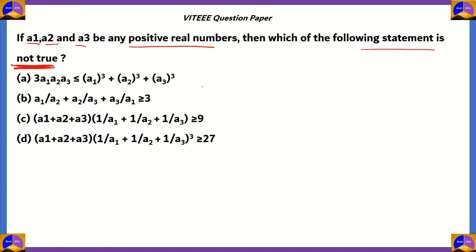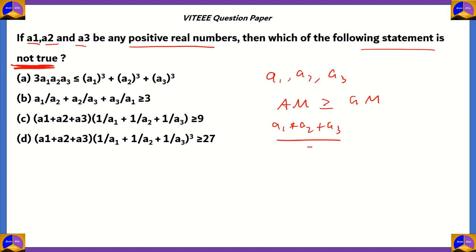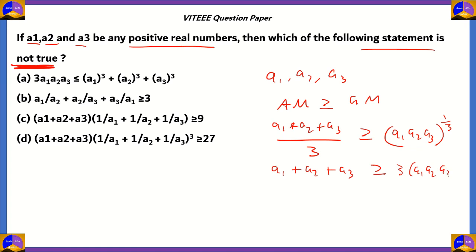For option A, we use the AM-GM inequality. For positive reals a1, a2, a3, the arithmetic mean is always greater than or equal to the geometric mean: (a1+a2+a3)/3 ≥ (a1·a2·a3)^(1/3). Taking 3 to the other side and cubing both sides, we can derive that a1³+a2³+a3³ ≥ 3·a1·a2·a3. So statement A is true, making option A incorrect as an answer.